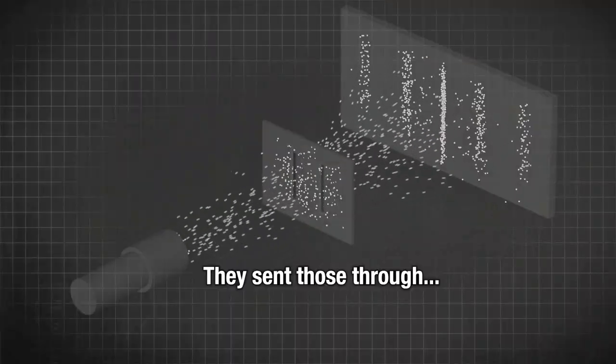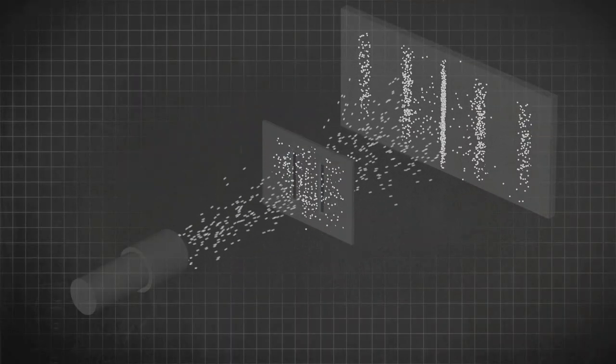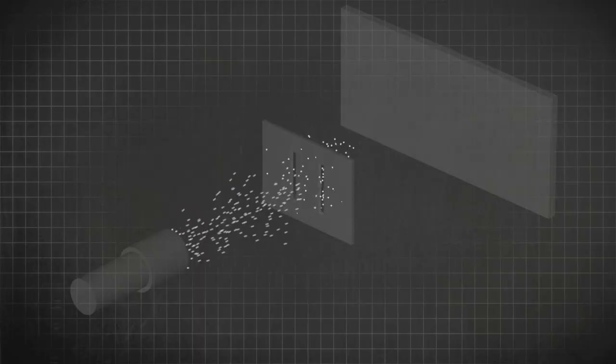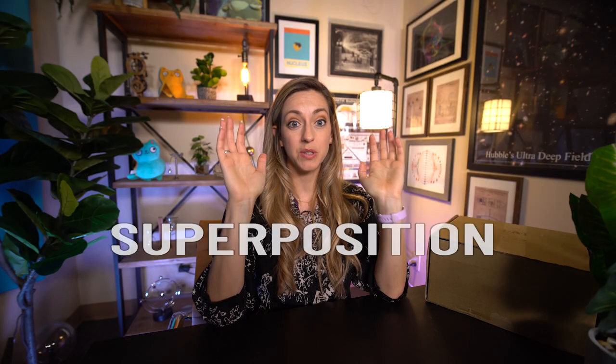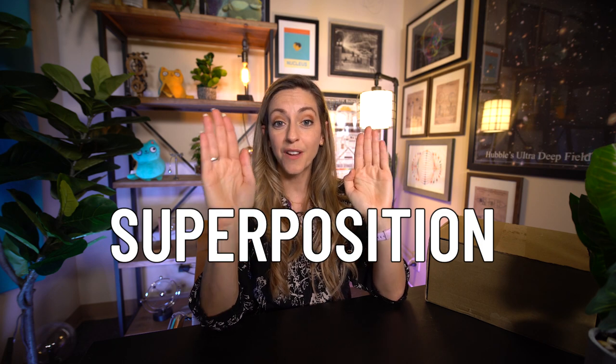Now back to how it's possible for electrons to act like waves. They sent those through individually, one at a time, and over time they're building up not in two lines but in an interference pattern. That's pretty weird, right? If you've got one particle, how could it be creating interference? The answer is the electron can be in a superposition of going through the left slit and the right slit at the same time — and that's why we see the wave interference pattern.